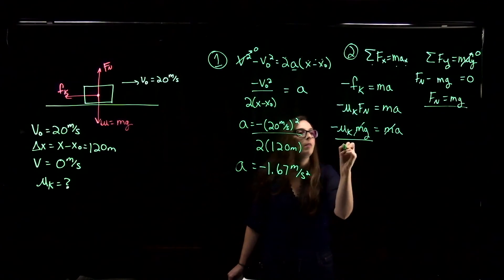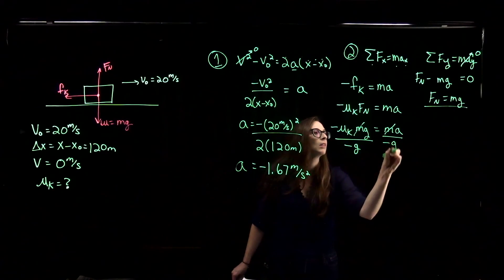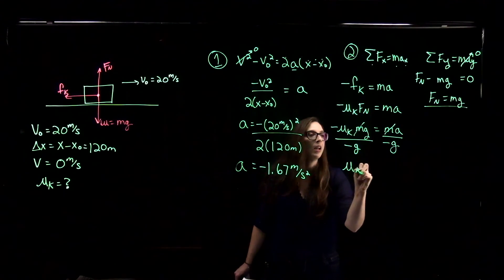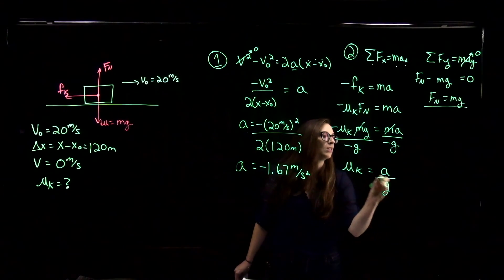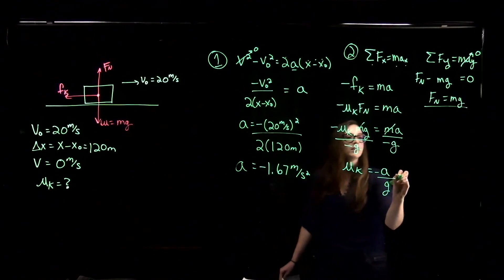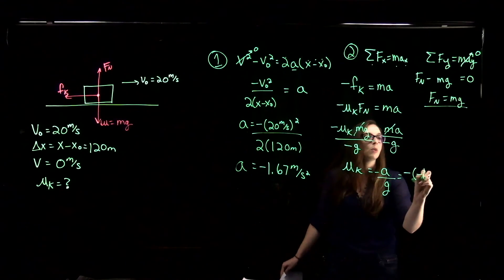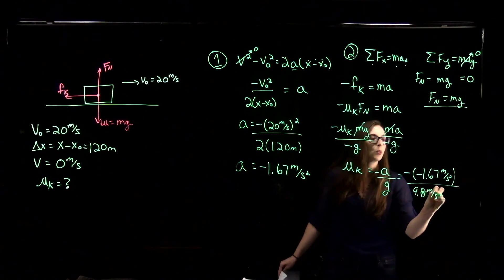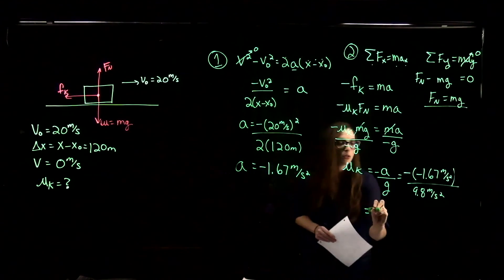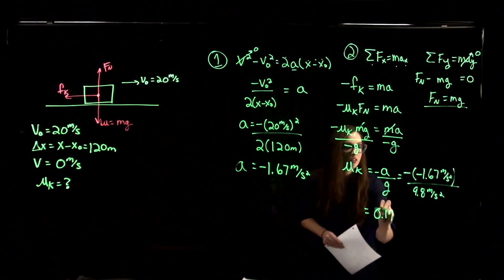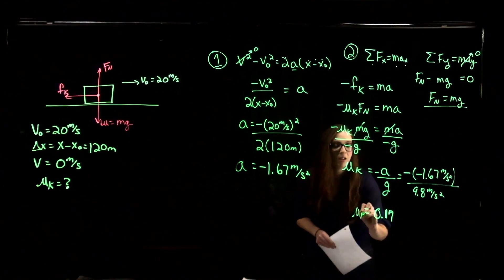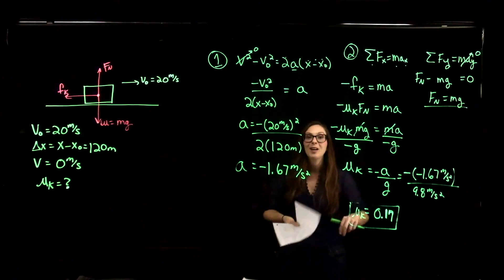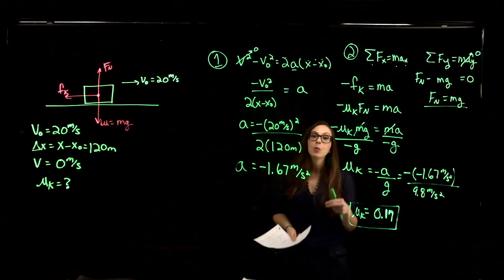Dividing both sides by -g cancels the mass and the negative sign, giving μk = a/g — but the whole expression is negative divided by negative, so: μk = -(-1.67) / 9.8 = 0.17. Coefficients of friction are usually less than 1. We solved this without ever knowing the mass of the object, which is why we always try to solve equations algebraically first.